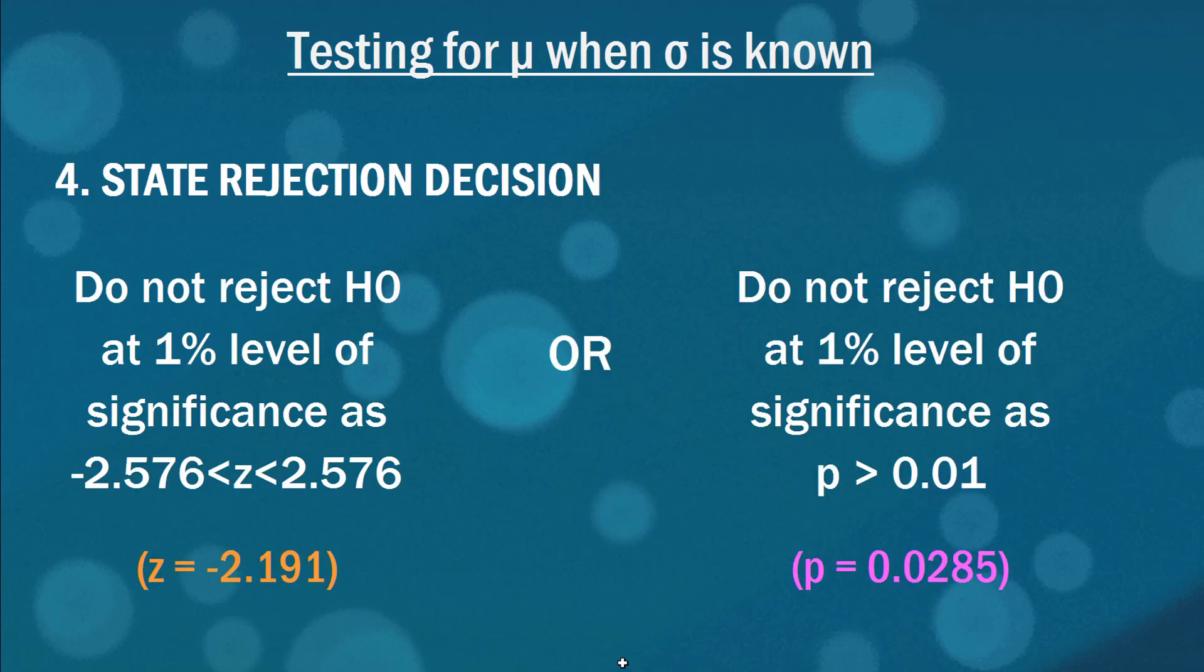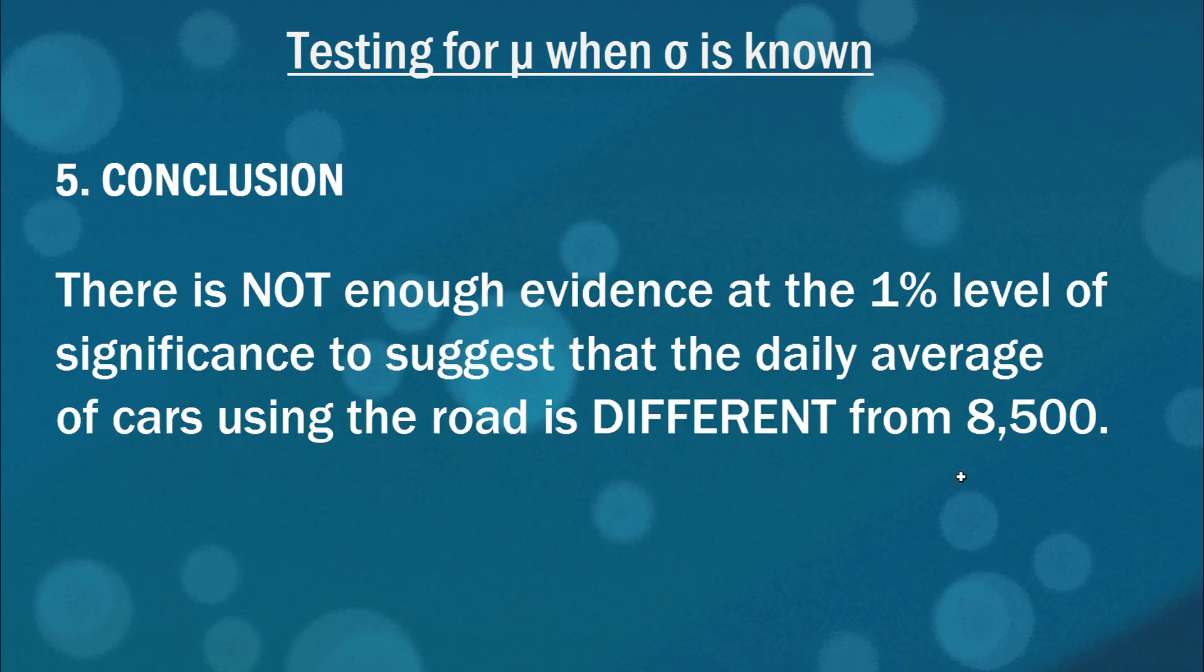So again, our rejection decision, we either do not reject the null hypothesis looking at our z statistic, because it's between minus 2.567 and 2.567. Or we can say we do not reject because the p-value is greater than 0.01, realizing that it's the 1% level of significance we're using here. So our conclusion here is that there's not enough evidence at the 1% level of significance to suggest that the daily average of cars using the road is different from 8,500. Now this brings up a really interesting point because it seems like it's a double negative, not enough evidence to suggest it's different, and it has to be a double negative. You cannot hear say that we have evidence for the null hypothesis. You can never find evidence in favor of your null hypothesis. You either reject it or you don't reject it. Be careful of ever saying the word accept your null hypothesis. You can never accept your null hypothesis.